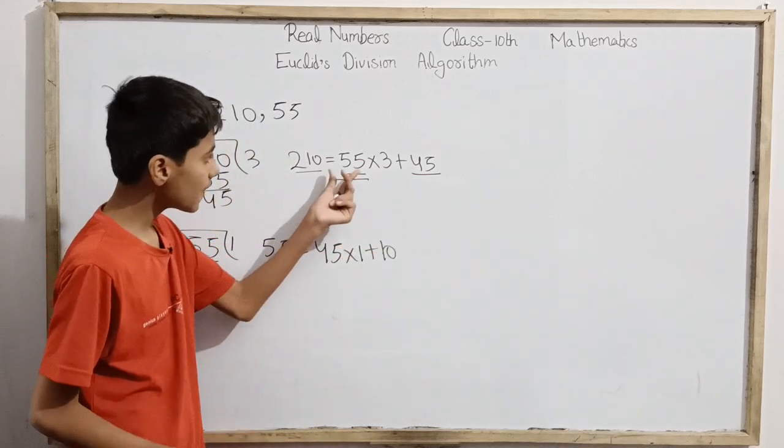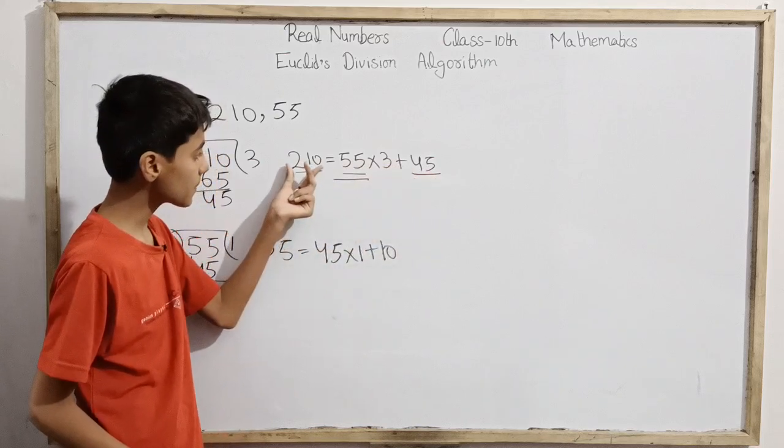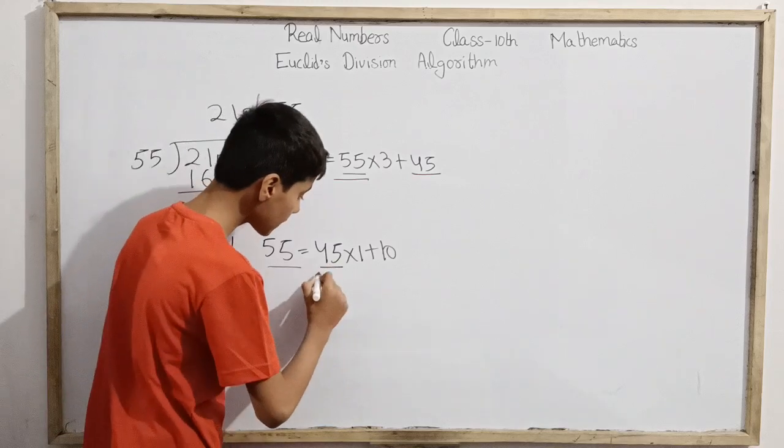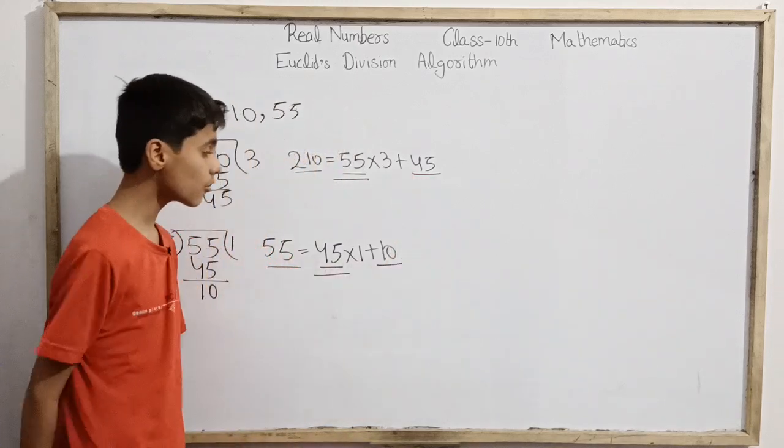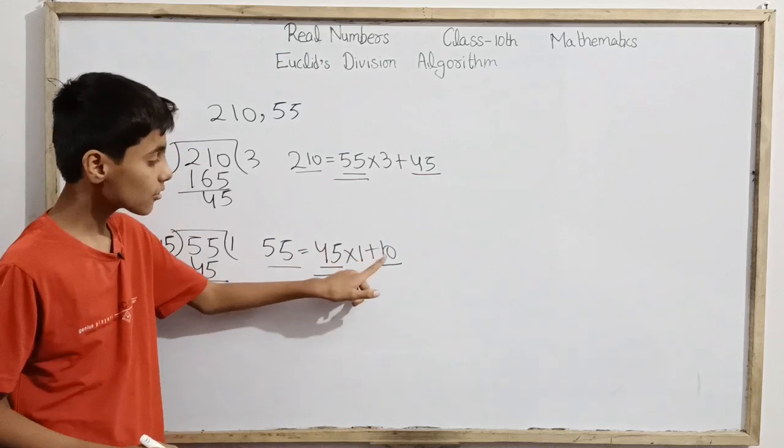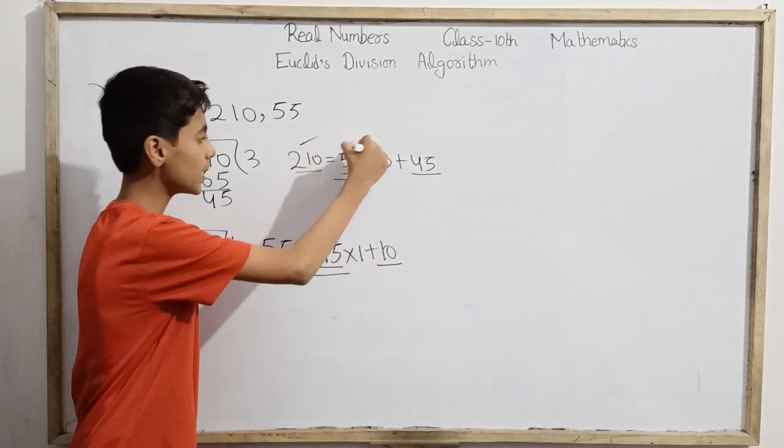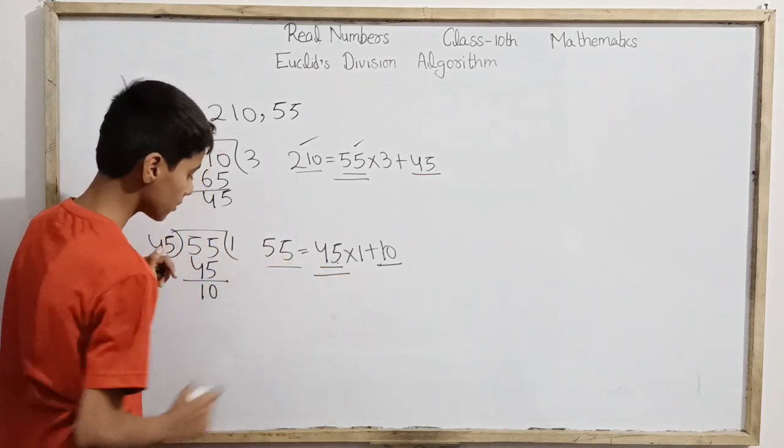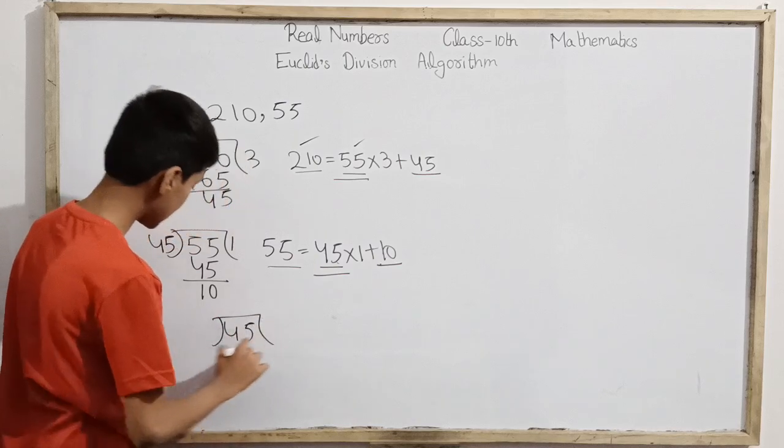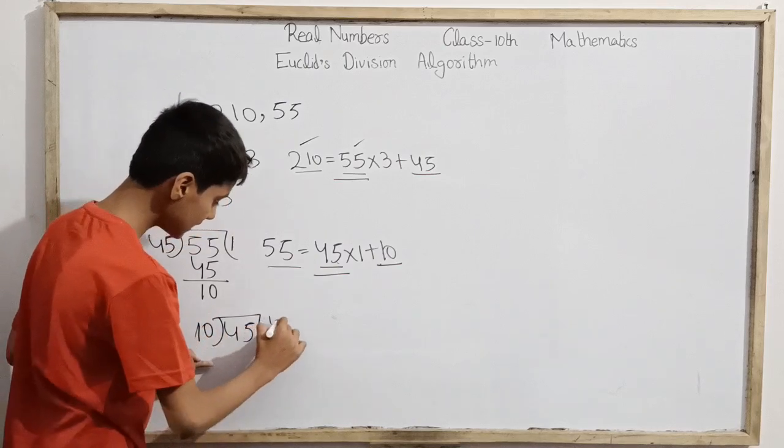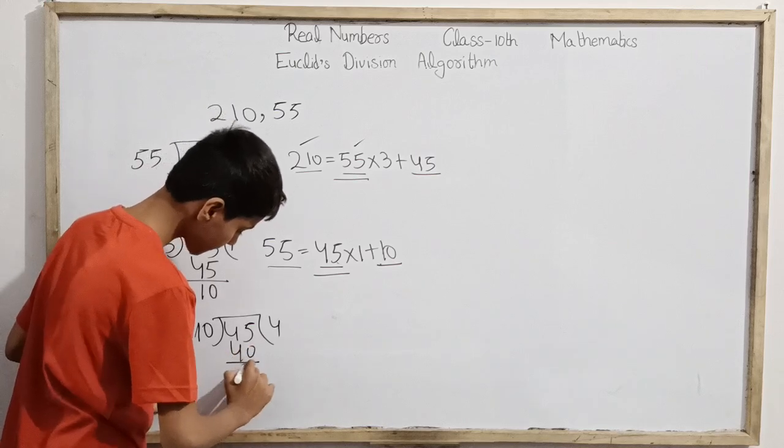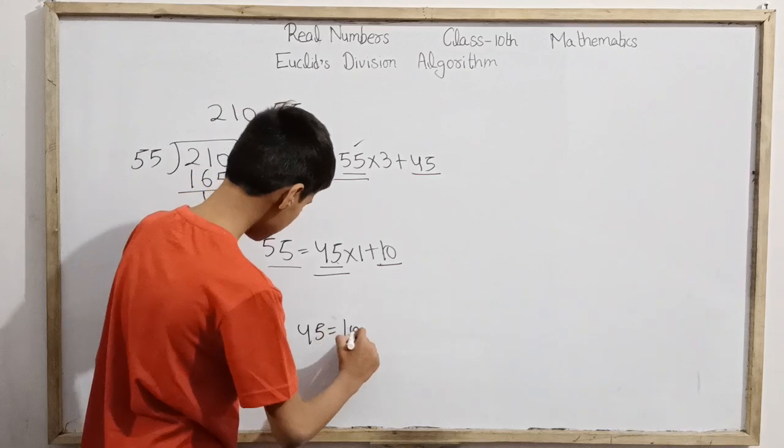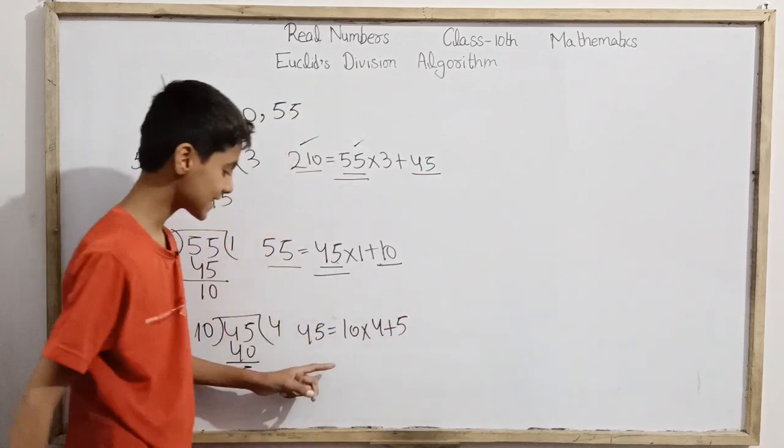I can express 55 as 45×1 + 10. The common divisor of 55 and 45 is the same as the common divisor of 210 and 55, and also the same as the common divisor of 45 and 10. This means the common divisor of 45 and 10 is the same as 210 and 55.